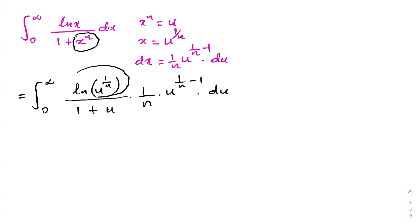In the numerator we have natural log of u to the 1 over n. By the logarithm power property, that becomes 1 over n times natural log of u. We can also take 1 over n outside the integral as a constant. Combined with the other 1 over n factor, we get 1 over n squared in front of the integral from 0 to infinity.